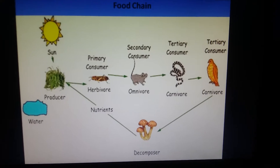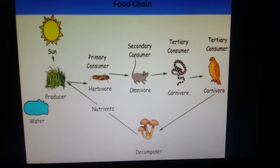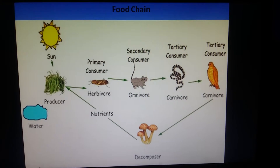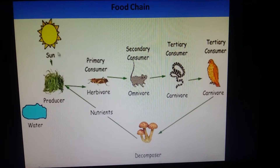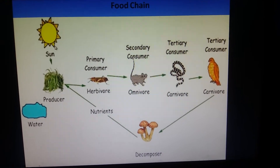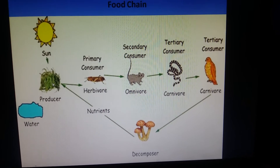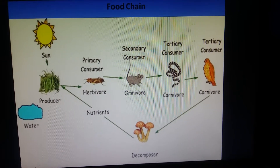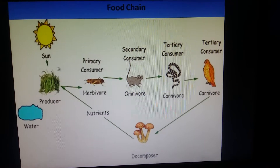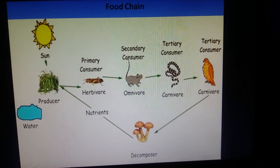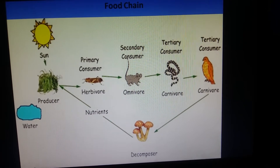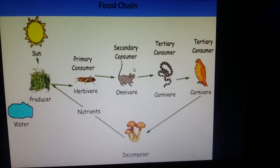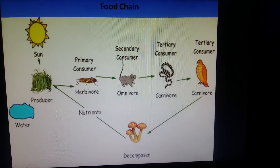Let me help you recall what we studied in our last class. We studied the food chain, which states that plants are the producers — they make their own food with the help of photosynthesis in the presence of sunlight, taking water and carbon dioxide. Animals which eat plants are herbivores and they are primary consumers.